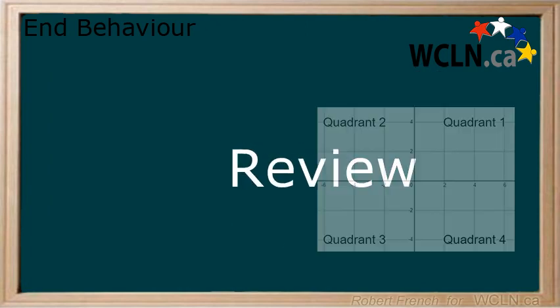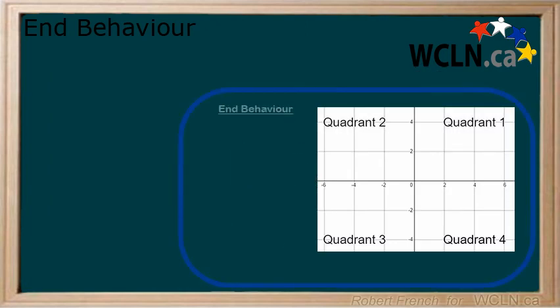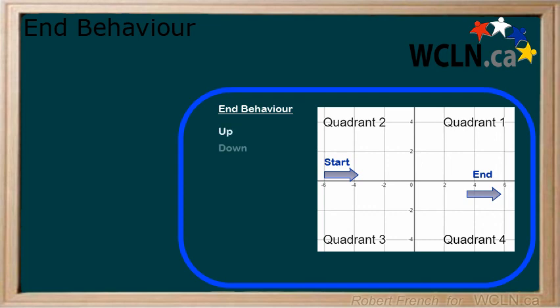In this lesson you learned about end behavior — that we describe the behavior of a function as it comes from negative infinity and goes to infinity by its direction, either up, down, or approaching, as well as its location using quadrants 1, 2, 3, and 4.